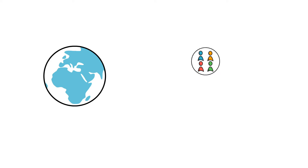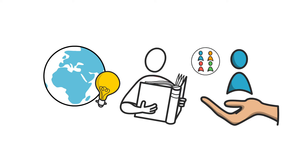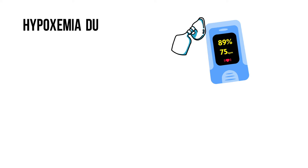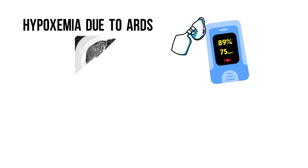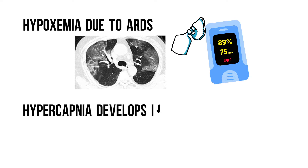A few things about the COVID-19 ICU population. Currently not a lot is known on best practice, so please do your own research and note that the views expressed in this video are subject to change. What we do know is that they typically present with primary hypoxemia and develop a form of ARDS, with bilateral ground-glass opacities on the CT scan. It seems that hypercapnia and subsequent respiratory acidosis, when not caused by other illnesses, develop in the ICU.